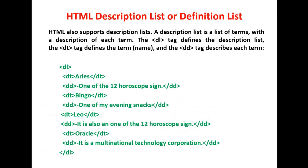The third type is the description list, also known as the definition list. A description list is a list of terms with a description of each term. The DL tag defines the description list, the DT tag defines the description term, and the DD tag provides the definition. DL is a paired tag and must be closed with a closing DL tag. Here Aries, Bingo, Leo, and Oracle are the definition terms (DT), and their corresponding definitions are given using the DD tag — for example, 'one of the 12 zodiac signs' is the definition for Aries.